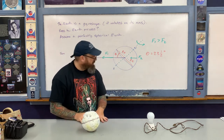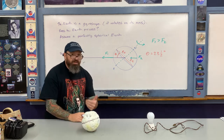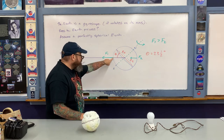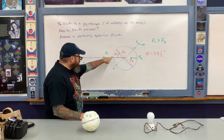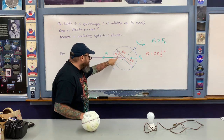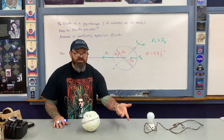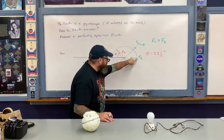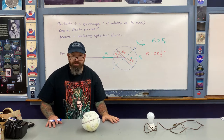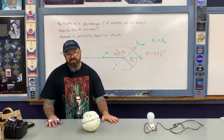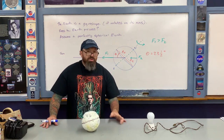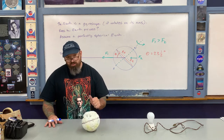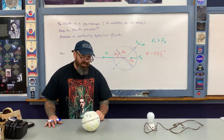The moment arm from the center to where F1 is applied is just the radius of the earth. The angle between that moment arm and F1 is zero degrees, and sine of zero is zero, so F1 does not exert a torque. For F2 on the back side, the angle between the moment arm and F2 is 180 degrees, and sine of 180° is also zero, so F2 does not exert a torque either. If the earth is a perfect sphere, neither F1 nor F2 exerts a torque, so the earth would not precess.